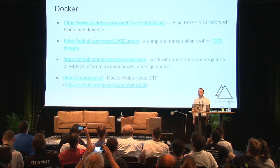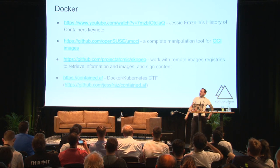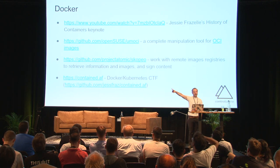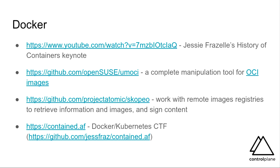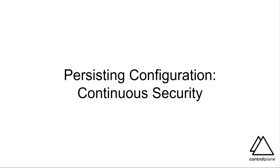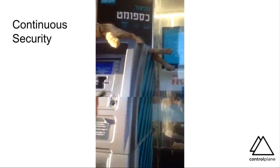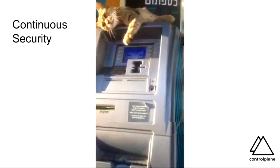There are lots of different ways to build images. My favorite thing here is actually umoci, from an Australian developer called Aleksa Saraі who is also running the rootless containers project — he inspired a lot of work that Jesse did, has been shipping features into the kernel and into runc, and fixing Golang bugs related to this for the last few years. We have a huge debt of gratitude.